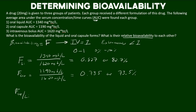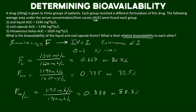We want to do capsule to liquid, because that makes the most sense here given that the capsule is less bioavailable. If we do that math we get 88%, so the capsule is 88% bioavailable when compared to the liquid. This is what we would have expected, given that the capsule had the lowest bioavailability when compared to the IV form, and the liquid was next up.